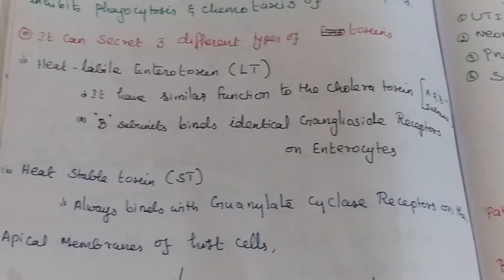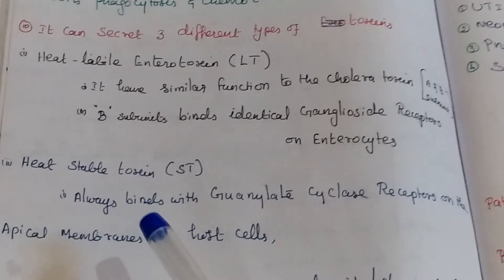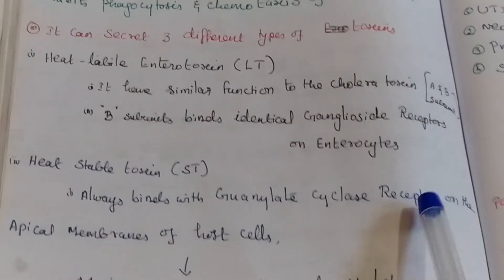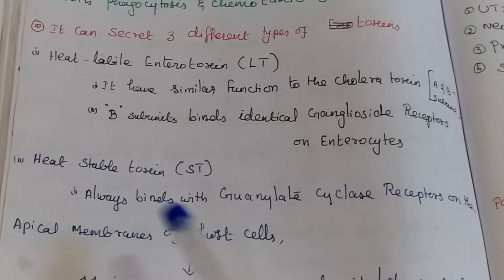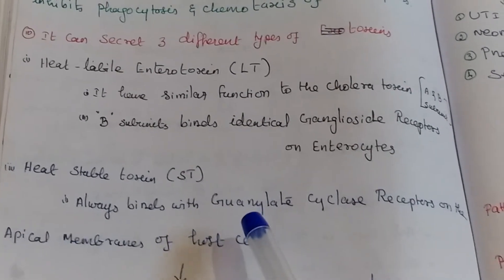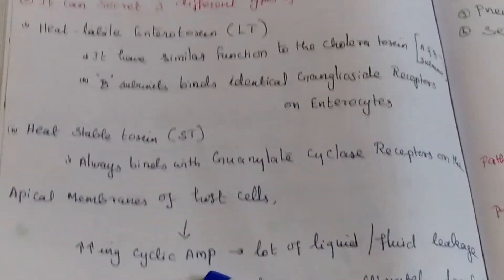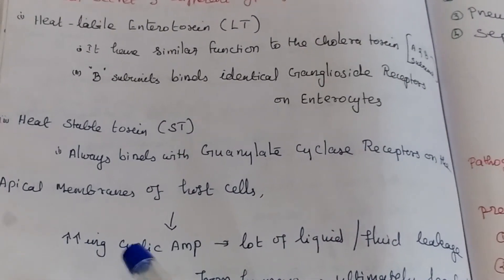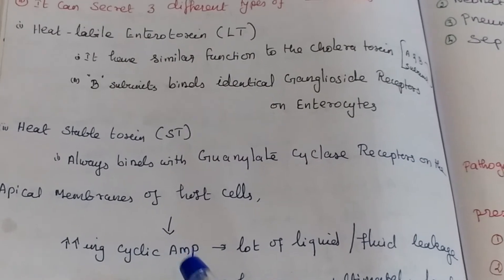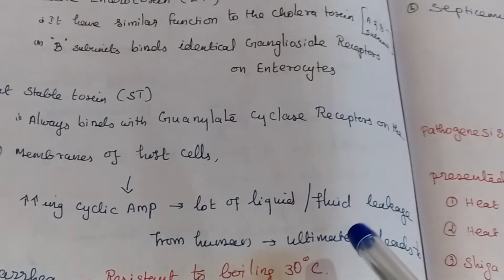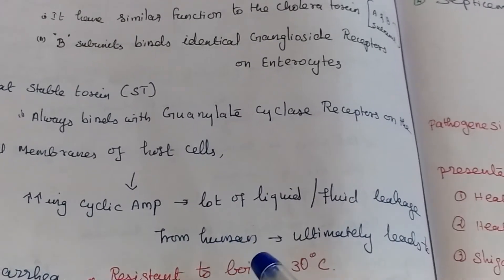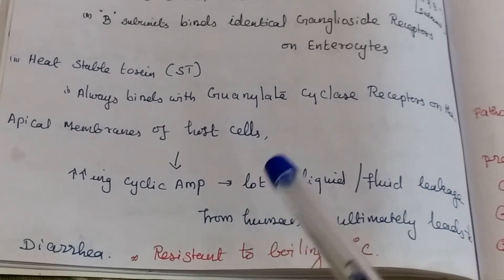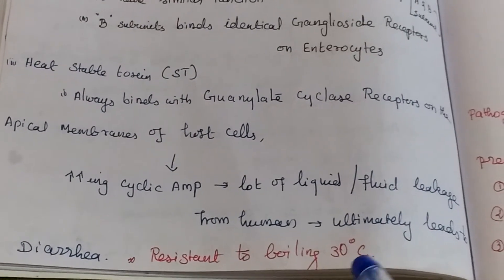The second toxin is the heat-stable toxin, ST. It always binds with the guanylate cyclase receptor on the apical membrane of the host cell. This increases cyclic AMP, causing a lot of fluid leakage from human cells, which ultimately leads to diarrhea.